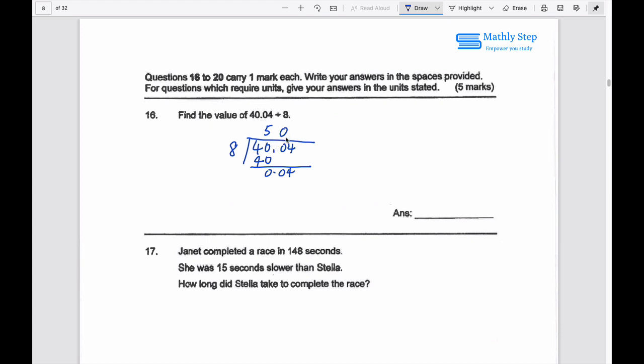And then 4, also not enough. So we add 0. And then we add a 0. So 5 times 8 equals to 40. And remaining 0.